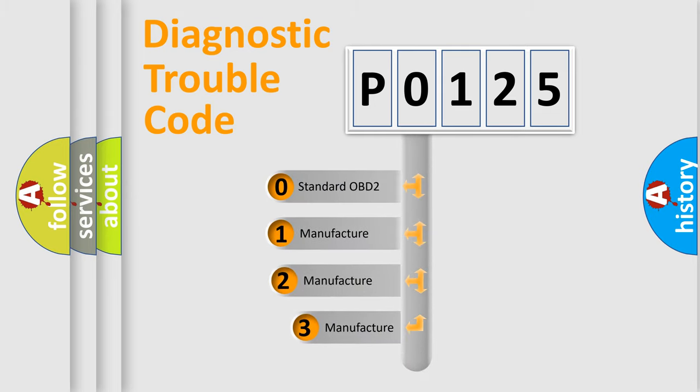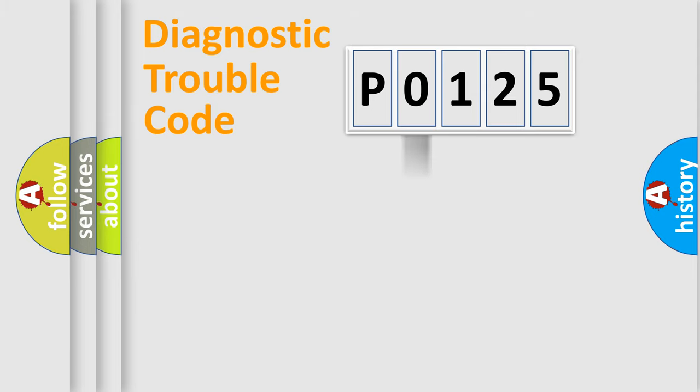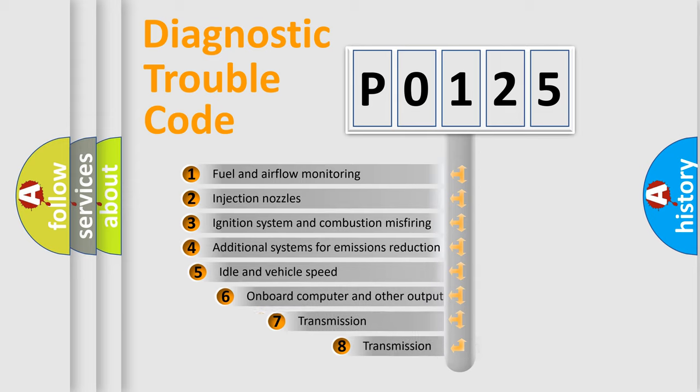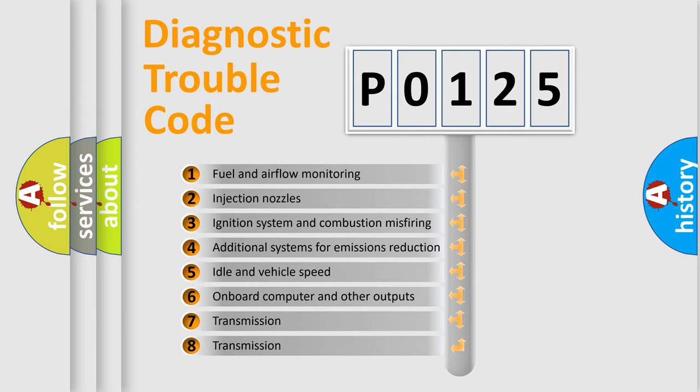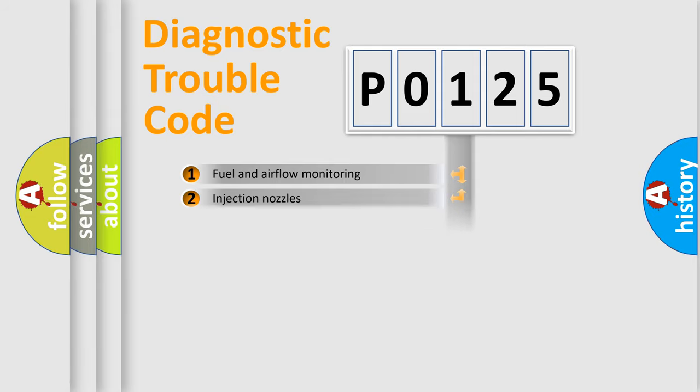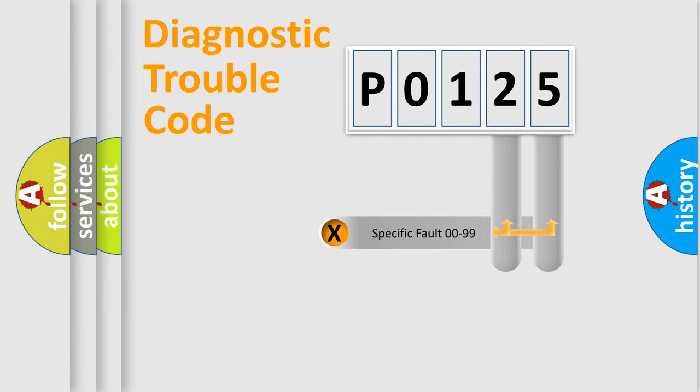If the second character is expressed as zero, it is a standardized error. In the case of numbers 1, 2, 3 it is a more prestigious expression of the car specific error. The third character specifies a subset of errors. The distribution shown is valid only for the standardized DTC code.